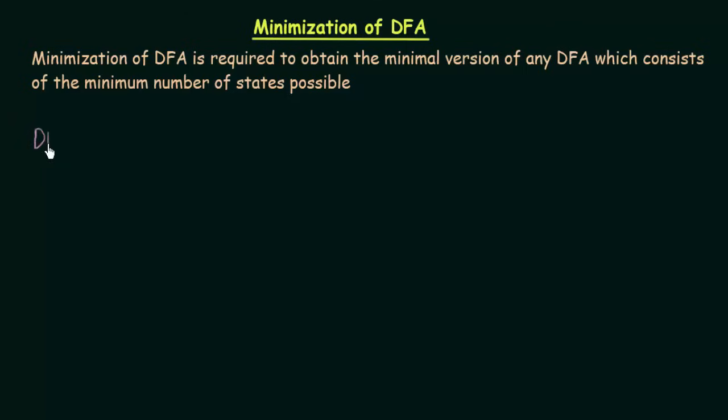Suppose you are given the task to design a DFA, any DFA, and then you design this DFA using 5 states. Alright, and your friend designs the same DFA using 4 states. Both the DFAs are correct. Both the DFAs perform the exact same task. But one of them is designed using 5 states, another is designed using 4 states.